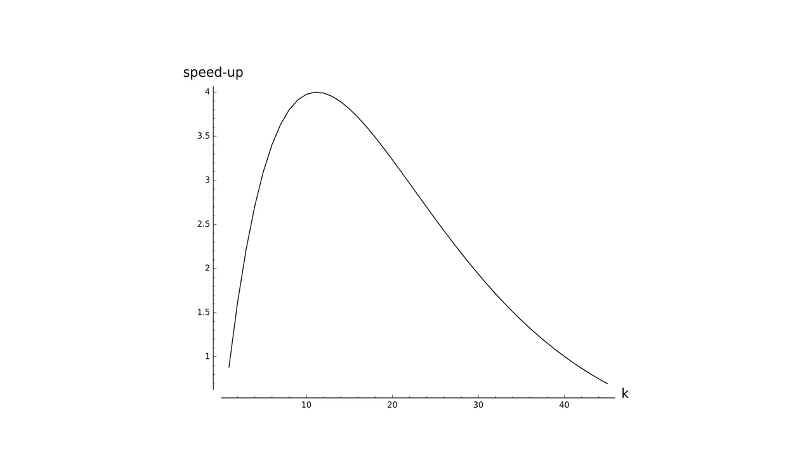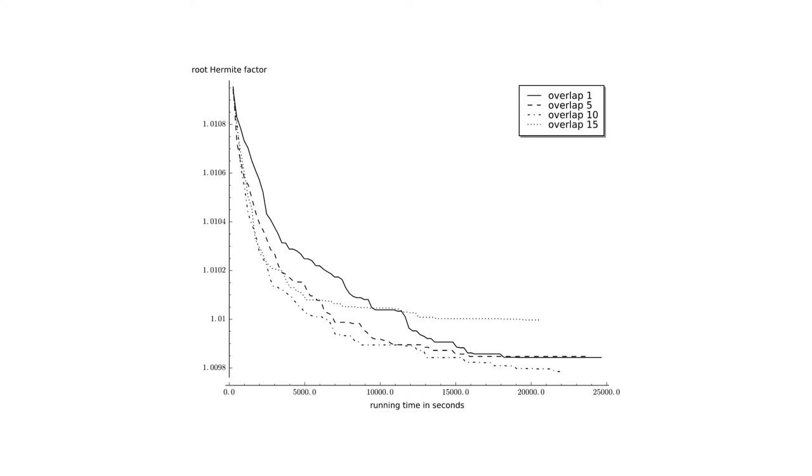In order to check if our analysis actually holds up in practice, we implemented the algorithm and we ran a set of experiments. And here we see the results of one set of experiments. The y-axis describes the length of the first vector in the basis. So it's a measure of the output quality. And on the x-axis, we have the running time. So each of these curves shows how the length of the first vector in the basis develops over time during the execution of the algorithm. And we see indeed that for parameters k that are larger than one, the algorithm actually converges faster. So this seems to support our analysis.